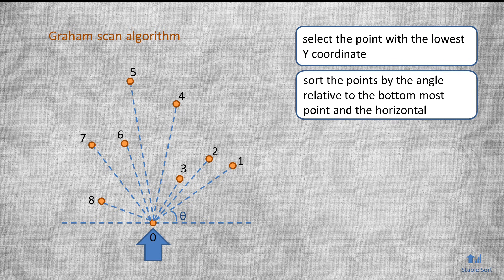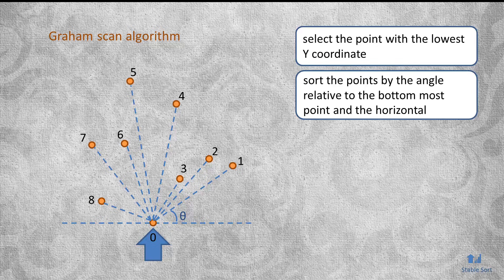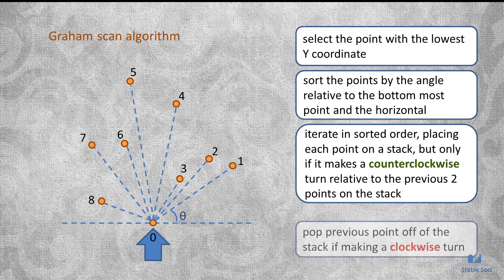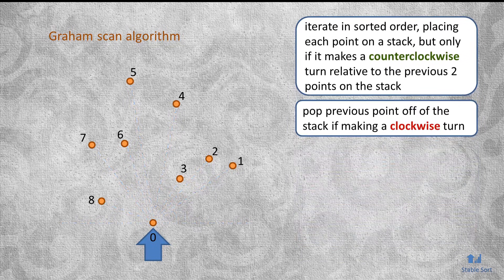You could see that the angles would range from 0 to 180 degrees, given that the reference point is the bottommost one in a set. Finally, the algorithm loops over those points in sorted order, effectively scanning in the counterclockwise direction.